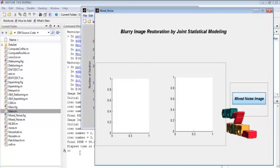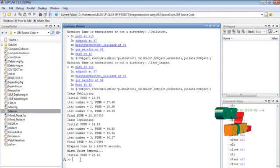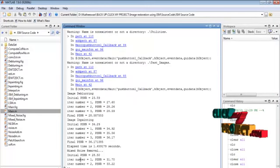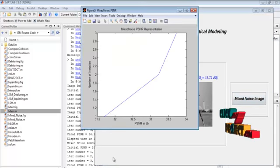Here also I mentioned the iteration level as three. So this process will be repeated for three times. Here I displayed the PSNR level for every iteration. Finally we got the mixer noise result.